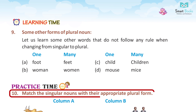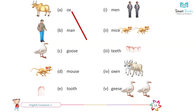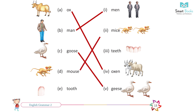Match the singular noun with their appropriate plural form. Match ox with oxen. Match man with men. Match goose with geese. Match mouse with mice. Match tooth with teeth.